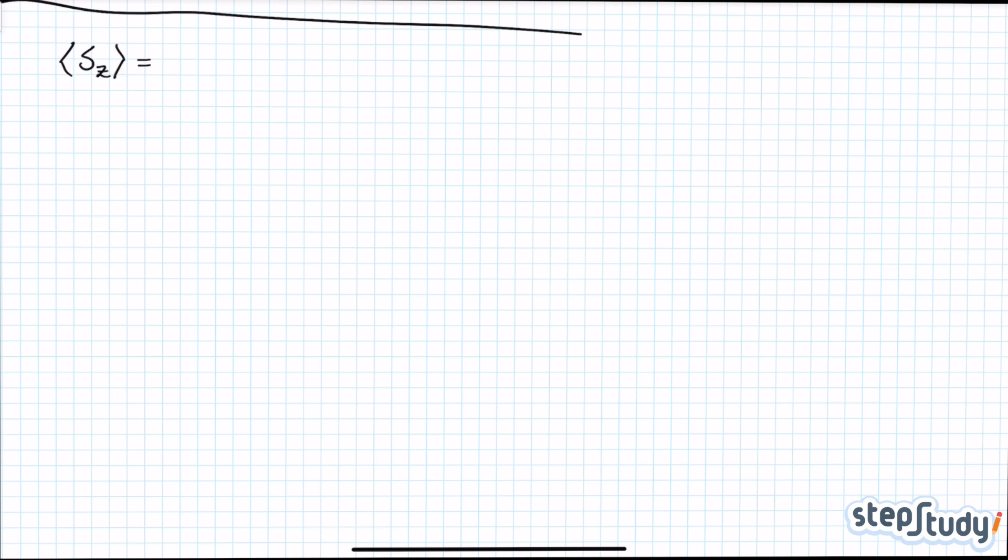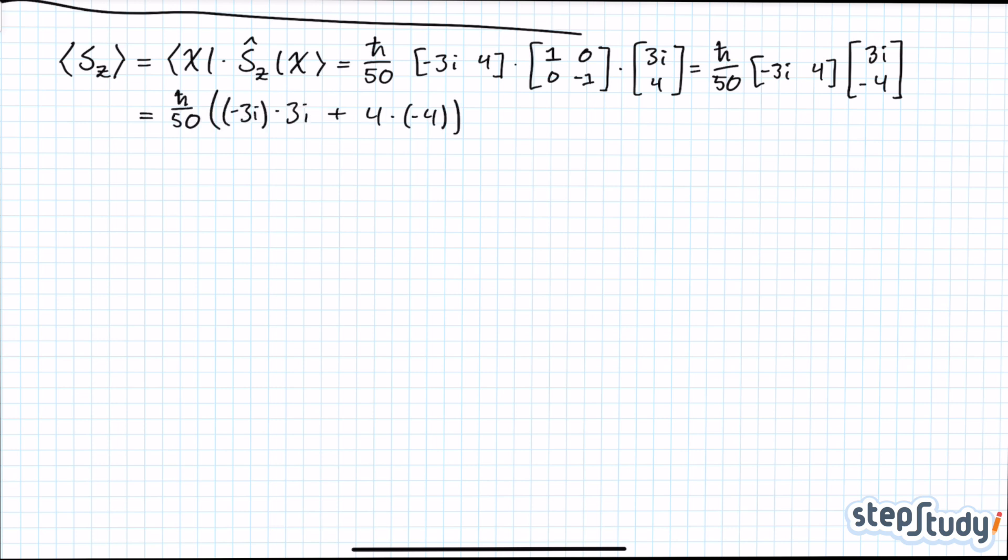And finally, for the expectation value of spin in the z-direction, you'll have to use the operator Sz, which is just h-bar over 2 times the matrix 1, 0, 0, minus 1. And here I've just skipped a couple of steps and multiplied all the fractions with each other. In the end, you'll find the expectation value of spin in the z-direction to be minus 7 h-bar over 50.